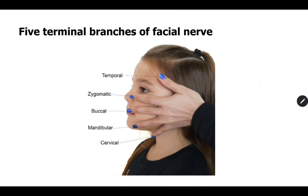An easy way to remember the five branches of the facial nerve given inside the parotid gland is to place the five fingers of your hand on the face. Put the thumb on the forehead, index finger just below the eye, middle finger over the mouth, ring finger over the margin of the mandible, and the little finger towards the neck. Each finger represents one branch: temporal, zygomatic, buccal, marginal mandibular, and cervical.